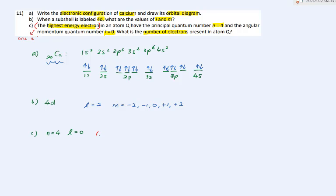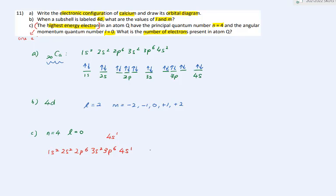Since the highest energy electron is in 4s, the valence configuration is 4s1. Writing the full electronic configuration: 1s2, 2s2, 2p6, 3s2, 3p6, and 4s1. Therefore, the total number of electrons present equals 19.